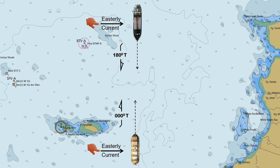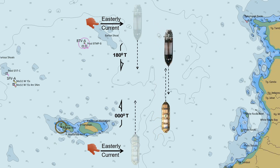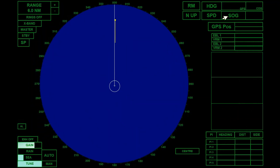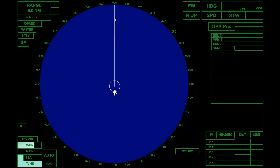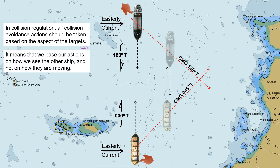Assuming there is a strong easterly current. As both vessels move in a reciprocal course, they both deviate from their planned track due to the effect of the easterly current. This ship is making a course made good of 045 degrees true, while the other vessel is making a course made good of 130 degrees true. In this scenario, if the radar is set to speed over ground, it may display a vector that indicates a crossing situation. This occurs because the radar calculates the vessel's movement relative to the ground, including external forces such as tidal currents. These forces affect the vector displayed on the radar PPI, which might show the course made good of each vessel rather than their actual heading. In collision regulation, all collision avoidance actions should be taken based on the aspect of the targets — we base our actions on how we see the other ship, and not on how they are moving.